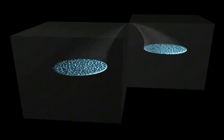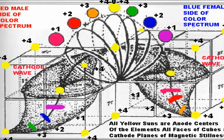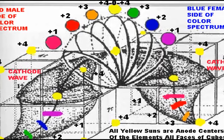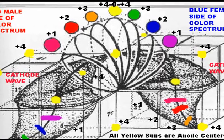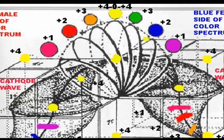This creates a very complex system of interlocking elements which all share their male and female electric lights with each other to give each other form.